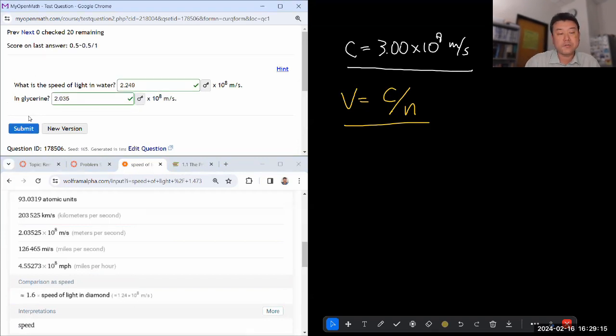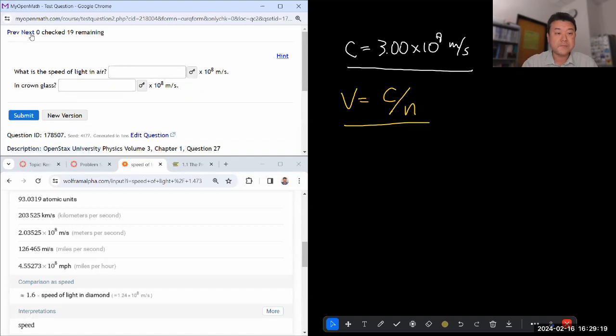Let's look at the next one. They're kind of all along the same theme. What is the speed of light in air? Oh, that is easy. Three. I think three will be graded as correct. You can also do 2.997.